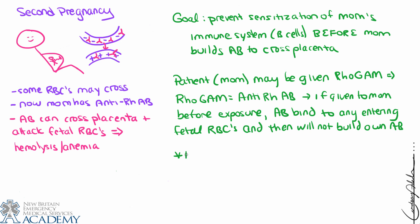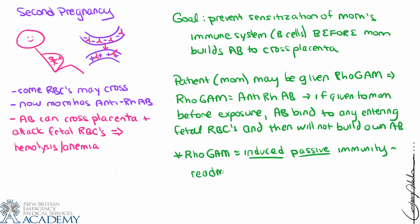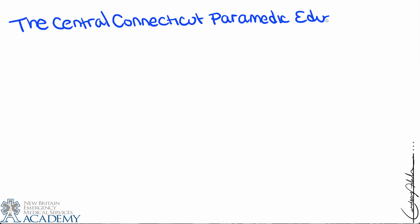So essentially, RhoGAM provides an induced passive immunity — something that's not going to be permanent. Mom's not going to build antibodies because she's been given these antibodies, which is definitely a positive outcome. This medication needs to be re-administered with subsequent pregnancies. The common timeline is at 28 weeks of pregnancy, and then also within 72 hours of delivery. That concludes our discussion on hemolytic disease of the newborn. Thanks for watching.